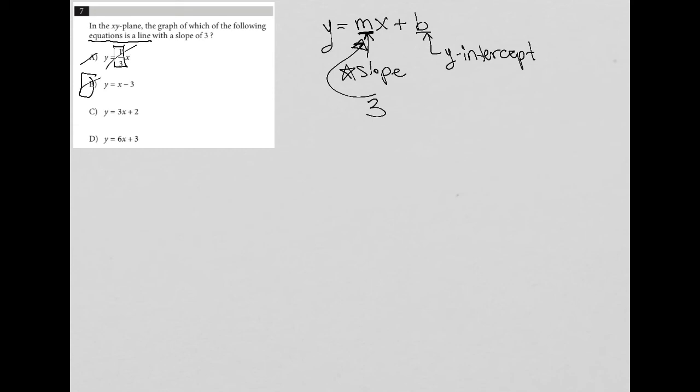B does not as well. The slope here, there's no number in front of the X. So anytime you don't see a number in front of the X, we can assume that that number is one. So the slope here is one. So B is gone.